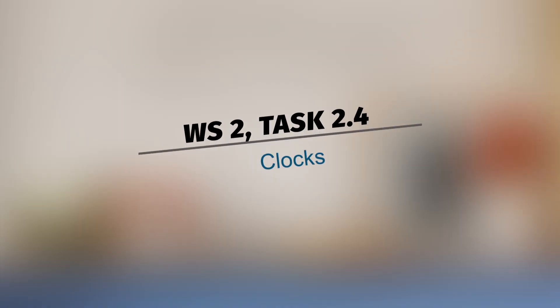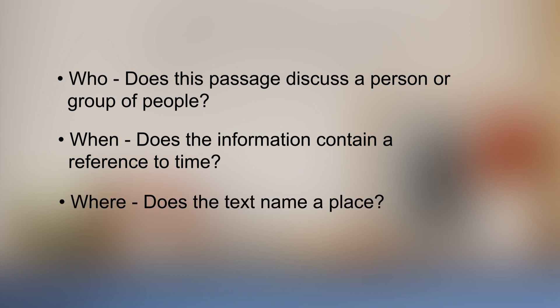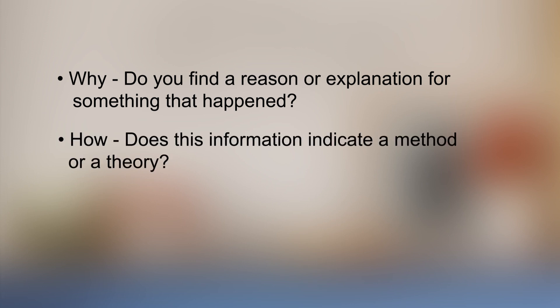Now, go to Worksheet 2 and look at Learn Task 2.4 on clocks. Identify the main idea and see where it is placed. Here are some tips to help you. Ask the following questions: Who? Does this passage speak about a group of people or a person? When? Does the information contain a reference to time? Where? Does this text mention a place? Why? Do you find a reason or explanation for something that happened? How? Does this information indicate a method or a theory?